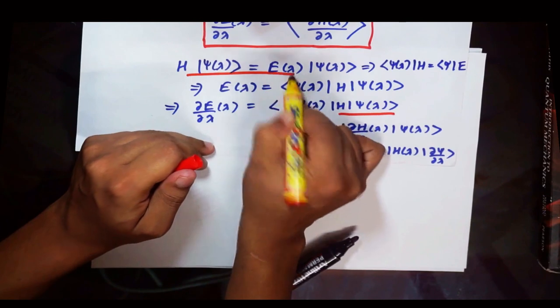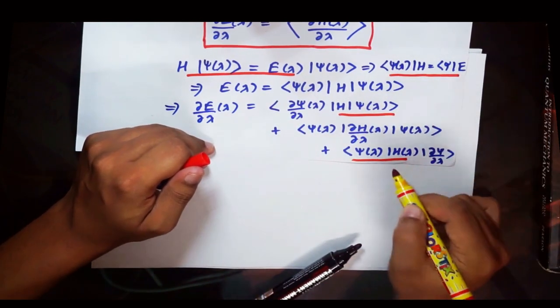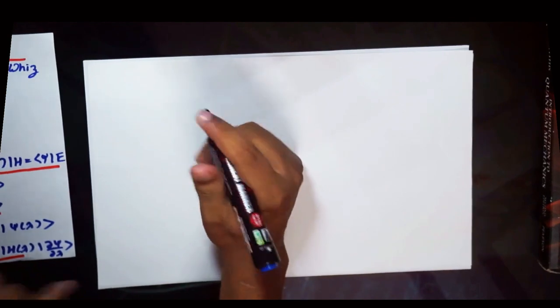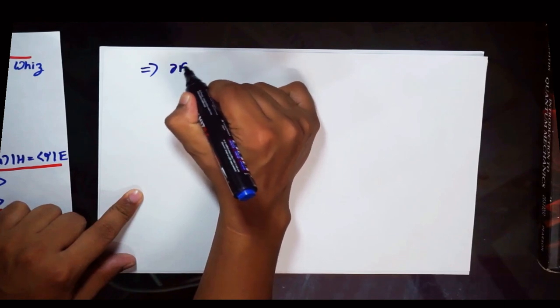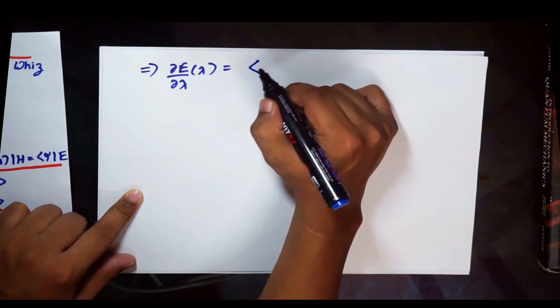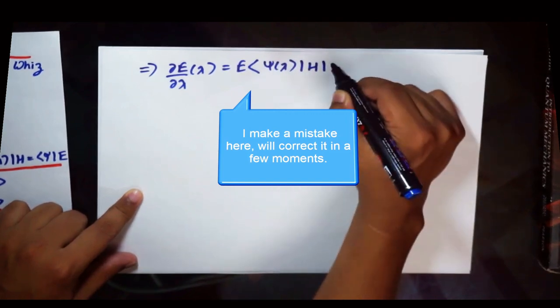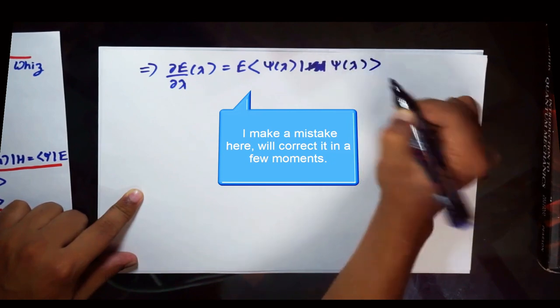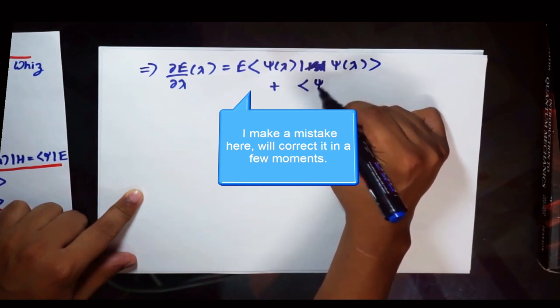So we will use this relation right here in this term and we will use this relation right here in this term. And then we will just plug these values to get del E by del lambda equals E psi of lambda. We have operated H so we will just get psi of lambda here. And then plus, and this term would remain intact as it is.